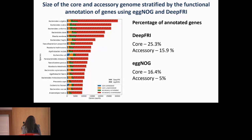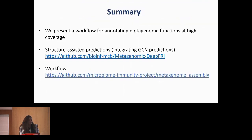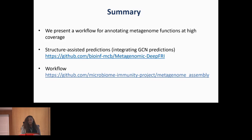To sum up, we've presented a workflow that annotates metagenome functions at high coverage, and we've seen that DeepFRY is not sensitive to taxa, so it provides a better representation of functions. Colleagues will be presenting on structure-assisted predictions using GCN and their application to metagenome data, and Pavel will be presenting on FuncSci and improvements to DeepFRY. This workflow is available on our GitHub page. Thank you all for listening.